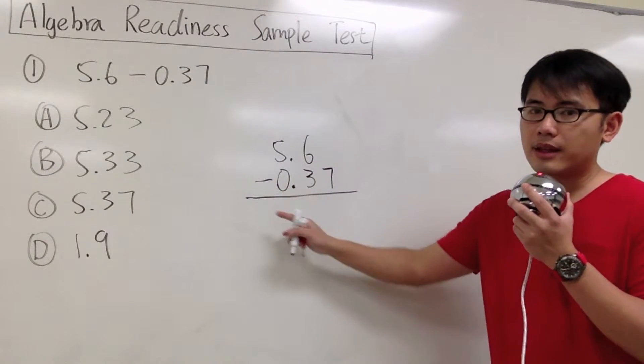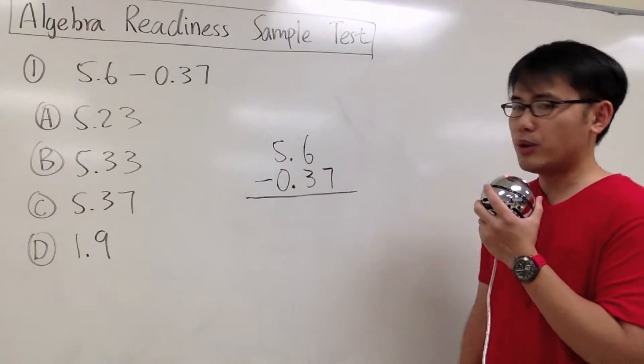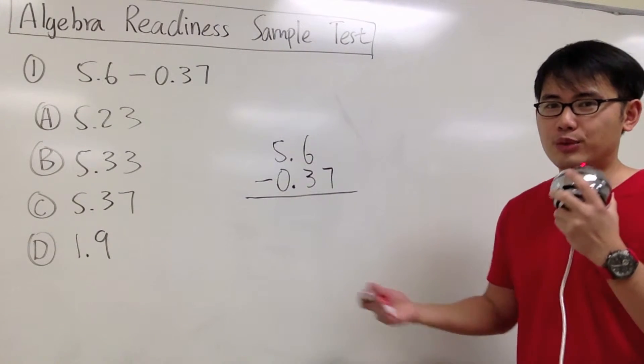Once again, when we subtract or when we add decimal numbers, always line up with the decimal point. And then we can just go ahead and either subtract or add the regular way.